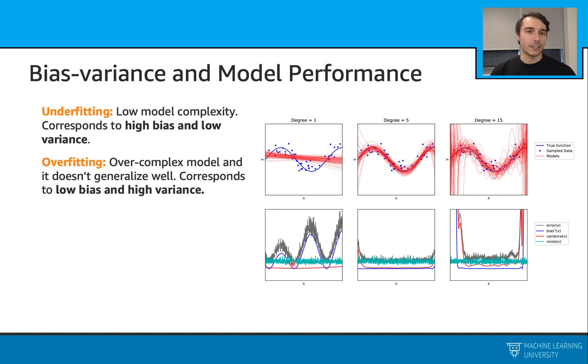This usually corresponds to high bias and low variance. Over-fitting, on the other hand, usually happens with over-complex models, and this is usually a generalization problem. So, our models do not generalize well beyond the training set, so they make more mistakes with the test or validation sets. This usually corresponds to low bias and high variance.